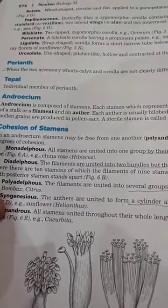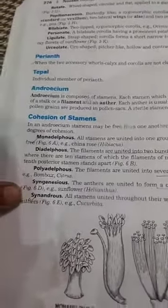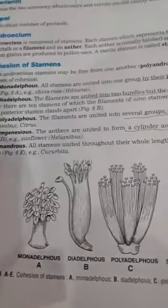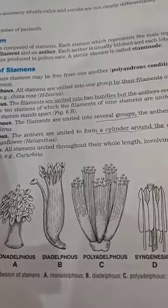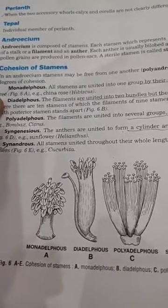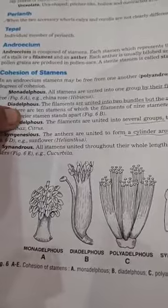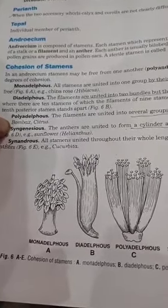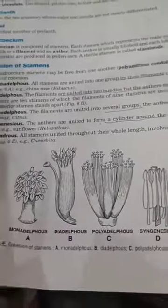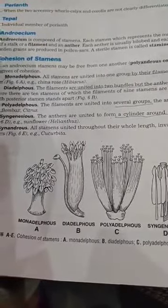Regarding the arrangement of stamens: when the filaments are united into one group but the anthers are free, it is called the monadelphous condition. Diadelphous means the filaments form two groups. Polyadelphous means the filaments are united into many groups, as seen in citrus plants.